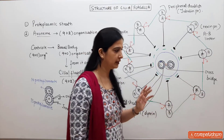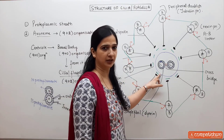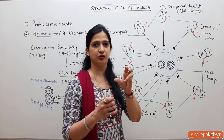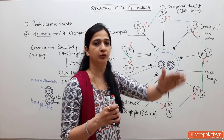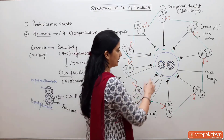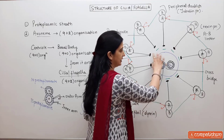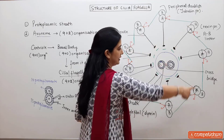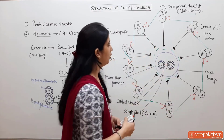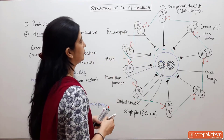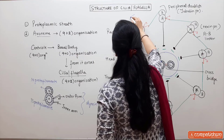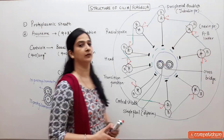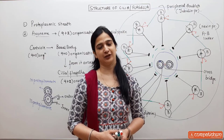The overall structure has 9 peripheral doublets and 2 central singlet fibrils — the 9 plus 2 organization. The doublet arms and the two singlet fibrils are made of dynin protein, which provides ATPase activity. The singlet fibrils are surrounded by the central proteinaceous sheath and connected by a cross bridge. When the head of the radial spoke touches the central sheath, the whole structure rotates — like a cart wheel rotating when its axle rotates — generating ciliary or flagellary movement. The entire axoneme is surrounded by the plasma membrane.